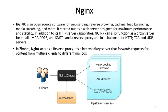In addition to its HTTP server capabilities, Nginx can also function as a proxy server for email — like in Zimbra where it proxies requests coming from IMAP, POP3, and SMTP — and as a reverse proxy and load balancer for HTTP, TCP, and UDP servers. In Zimbra, Nginx acts as a reverse proxy. It's an intermediary server that forwards requests for content from multiple clients to different mailboxes in the backend. In the diagram, you can see the position of Nginx and its relationship with other components of Zimbra.